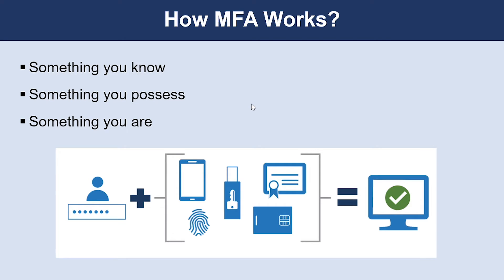Let's look at how multi-factor authentication works. Azure multi-factor authentication supplies added security for your identities by requiring two or more elements for full authentication. These elements fall into three categories: something you know, which might be a password or the answer to a security question; something you possess, which might be a mobile app that requires a notification or a token-generating device; and something you are, which is typically a biometric property such as a fingerprint or face scan used on many mobile devices.